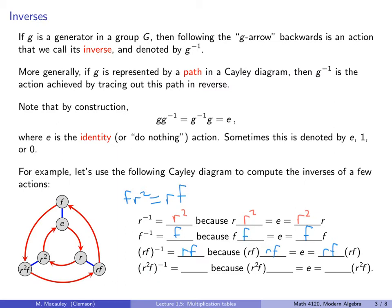Last one, R squared F inverse. If you start here, you do R squared F, how do you undo that? R squared F. So that's R squared F, because R squared F times R squared F is the identity. Notice that these three elements were their own inverse. These elements have order 2, because if you do them twice, you get back to the identity. This one is order 3, because you have to apply R three times, 1, 2, 3, to get back to the identity.